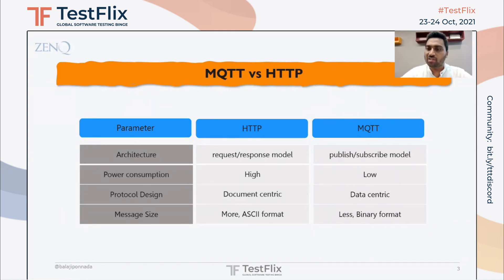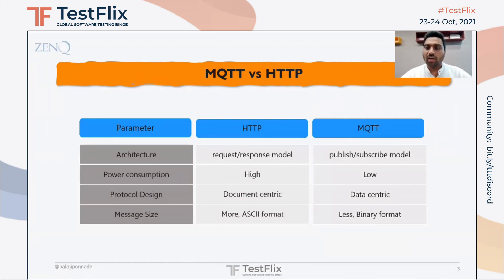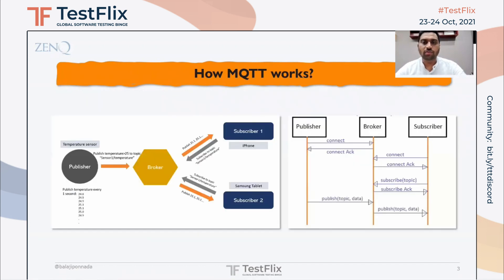MQTT works on a publish-subscribe model, which is a more asynchronous way of data transfer. This means you do not need a continuous or live connection between the publisher and the subscriber for data to be transferred. Due to this asynchronous nature, the power consumption is low, and this protocol is built to transfer more of a binary format or smaller data payloads. Let's see how MQTT works.